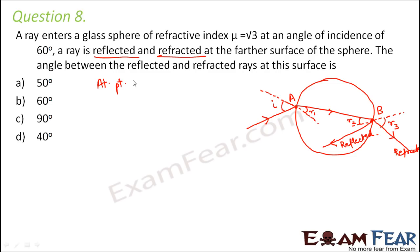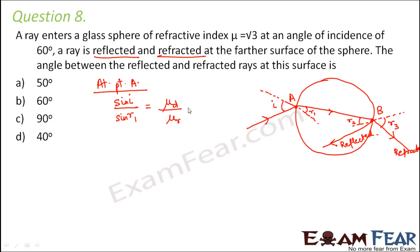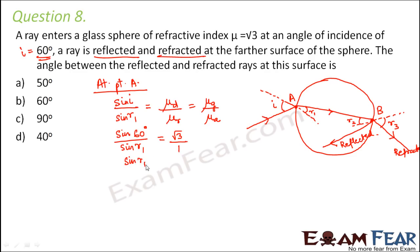At point A, applying Snell's law: sin(i) / sin(r) = mu_denser / mu_rarer. Here mu_denser is the refractive index of glass and mu_rarer is that of air. So sin(60°) / sin(R1) = root 3 / 1. Therefore sin(R1) = sin(60°) / root 3 = (root 3 / 2) / root 3 = 1/2, giving R1 = 30°.